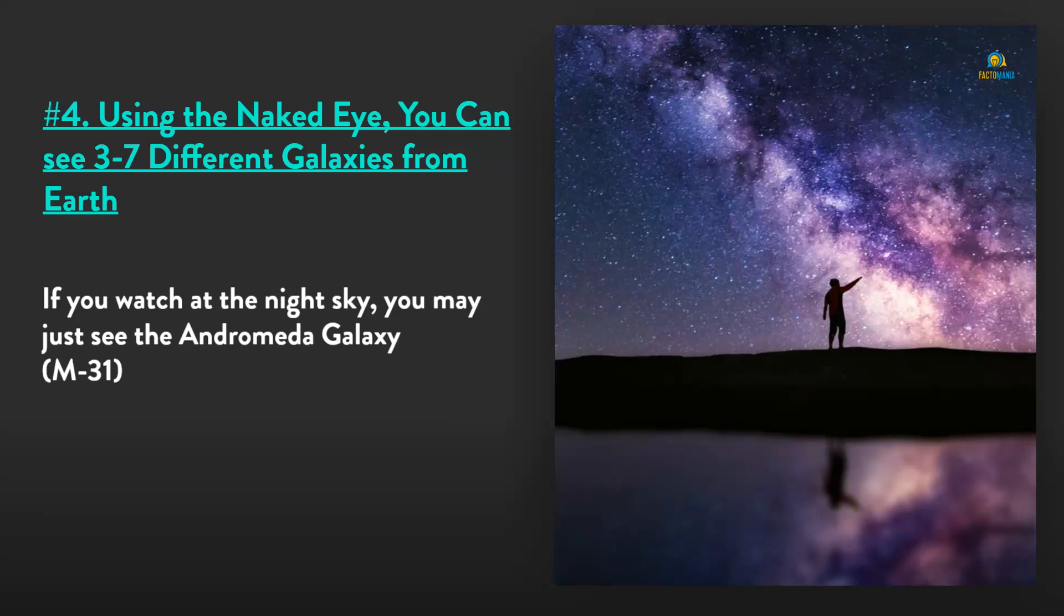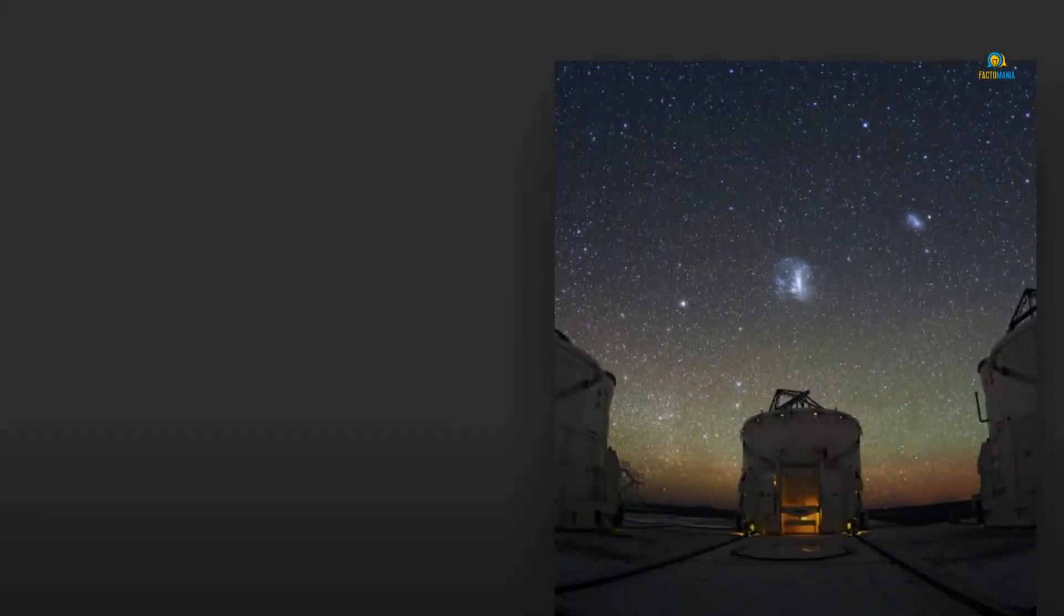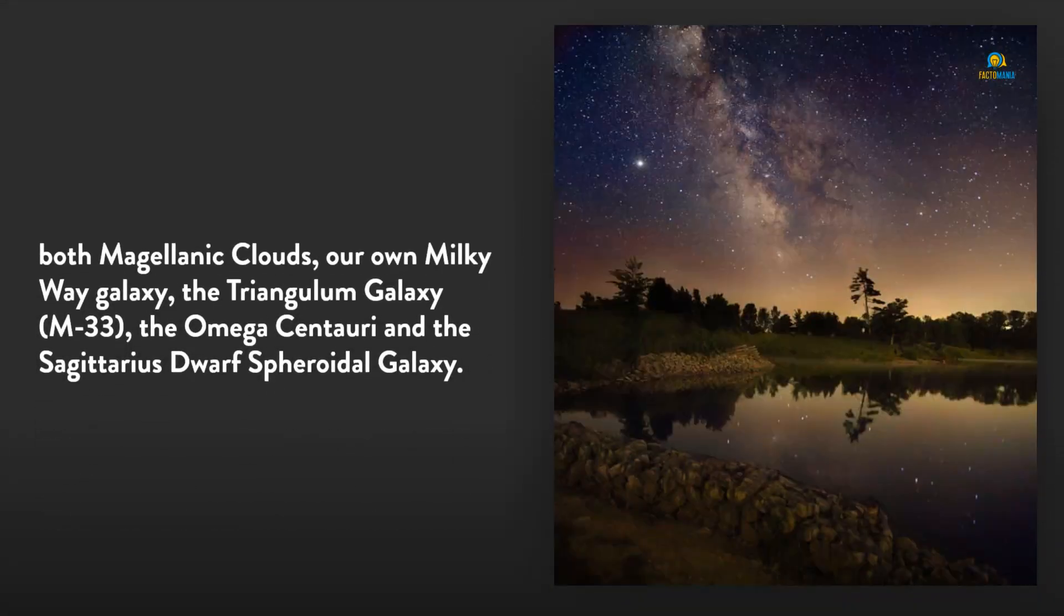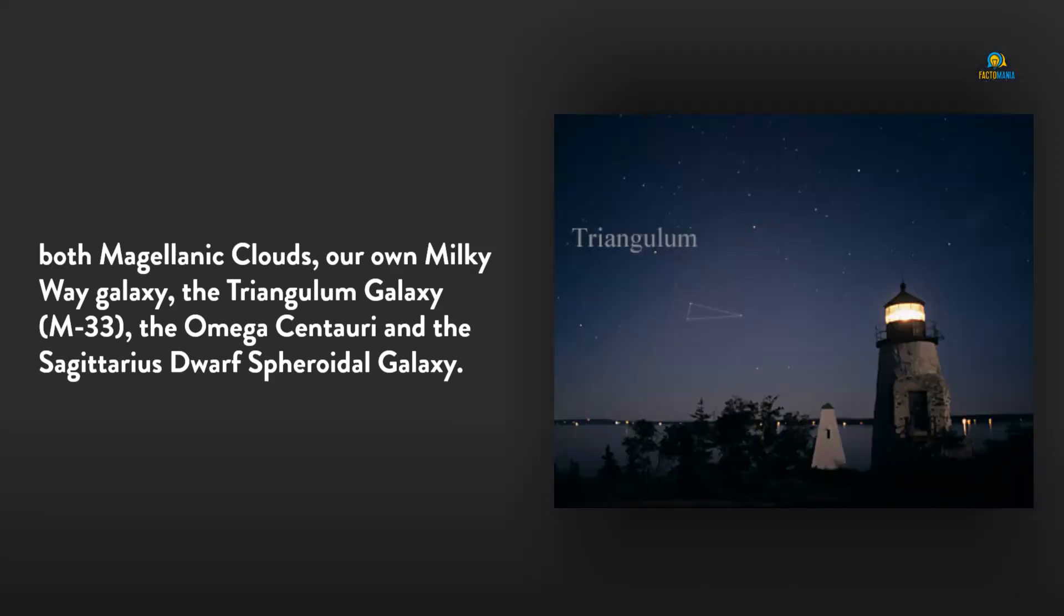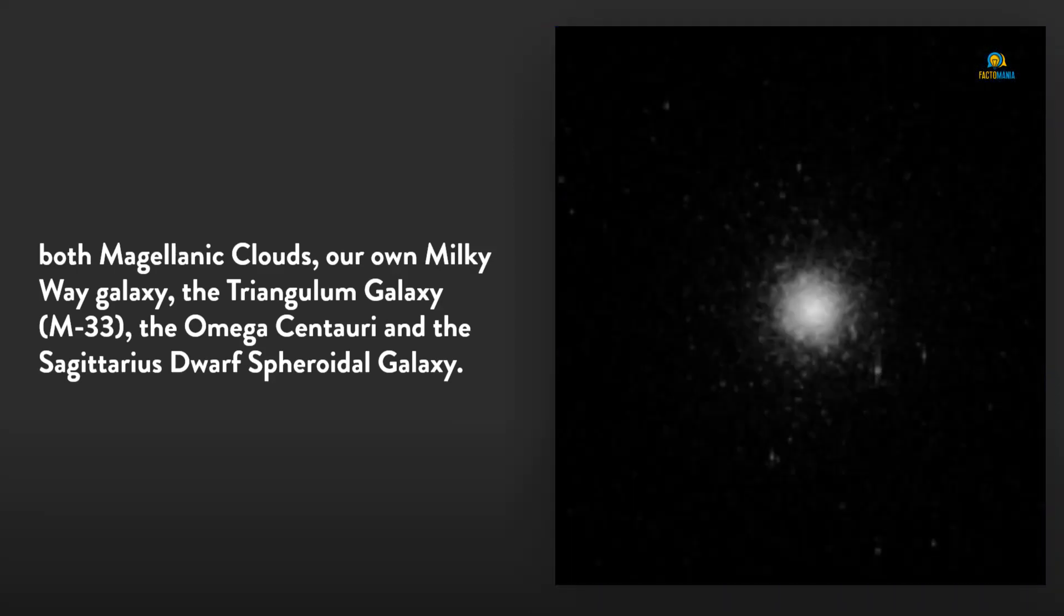Number 4: Using the naked eye, you can see 3 to 7 different galaxies from Earth. If you watch the night sky, you may just see the Andromeda galaxy M31, both Magellanic Clouds, our own Milky Way galaxy, the Triangulum galaxy M33, the Omega Centauri, and the mysterious Dwarf Spheroidal galaxy.